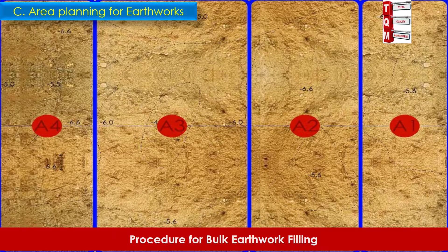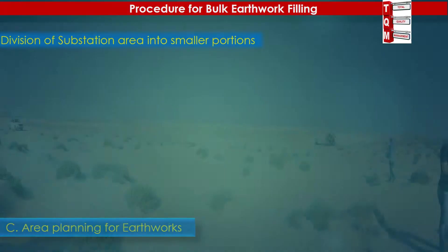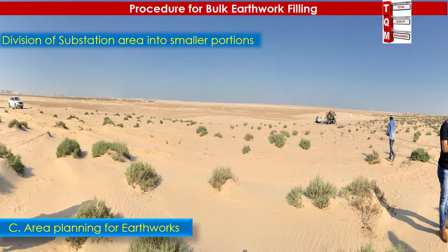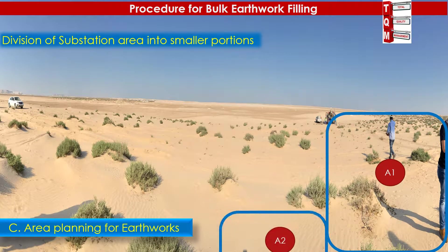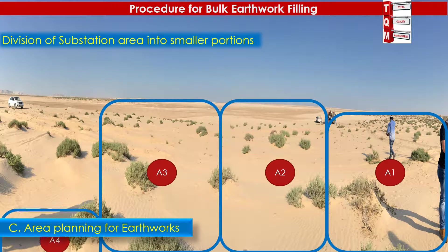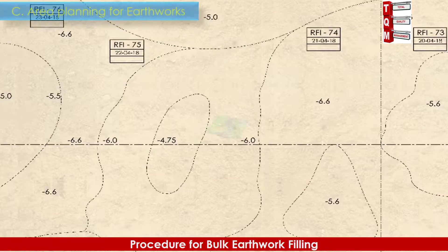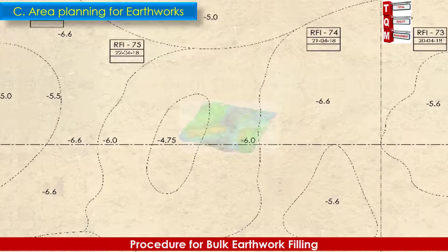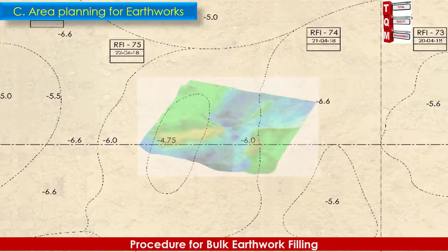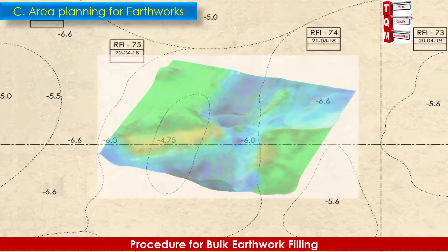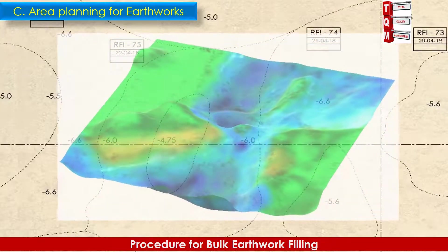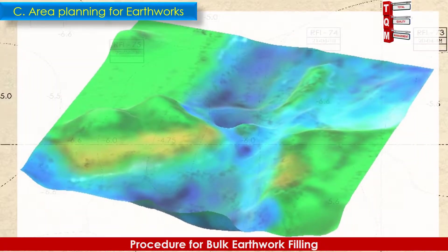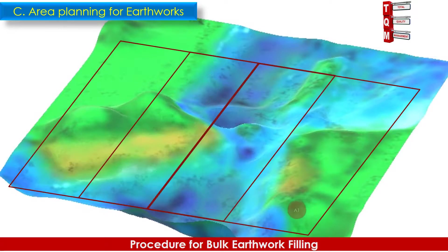They will decide the area division based on construction requirements and topography. The team will take input from the subcontractor for dividing the area. The actual site area may be divided into as many smaller portions as needed to easily execute and control the earthworks activity on site. After the site visit, the design engineer will prepare a 3D area plan if possible, reflecting the topographic details of existing ground conditions. This will help visualize the fill and cut areas prior to the start of work. Based on the decision of the project team, the design engineer will issue an area plan showing areas marked with their respective numbering.